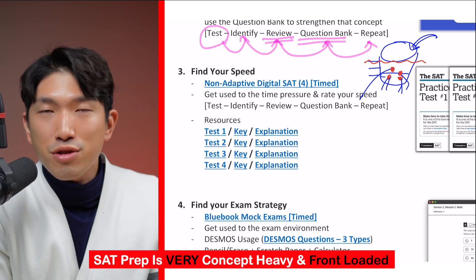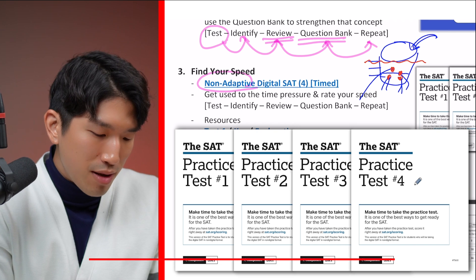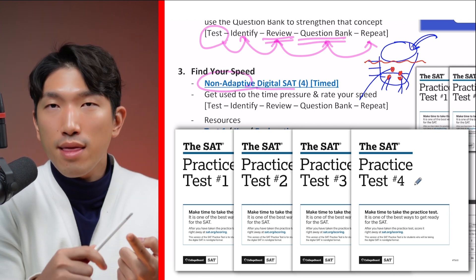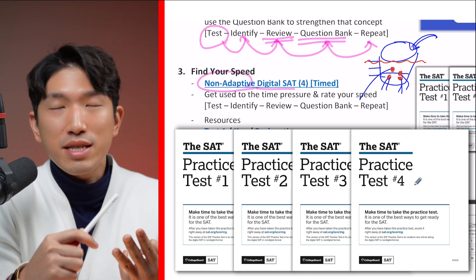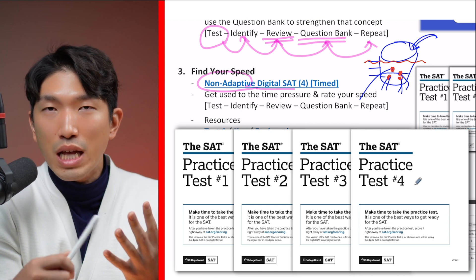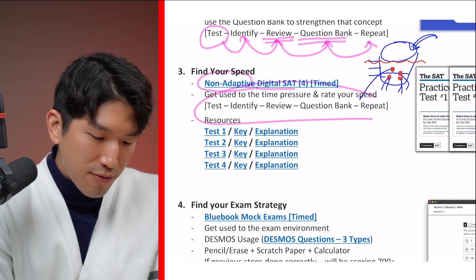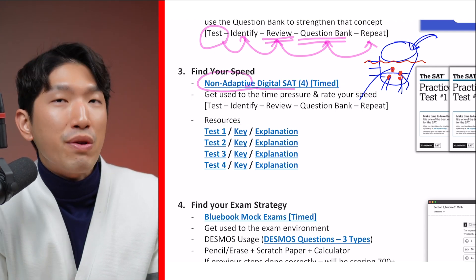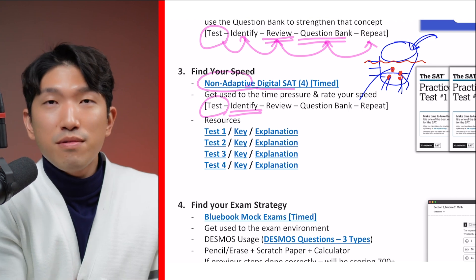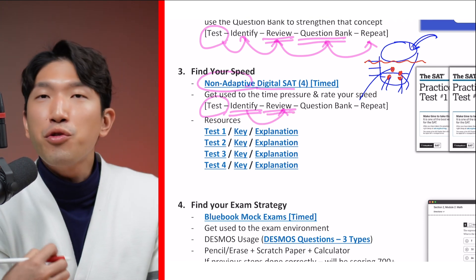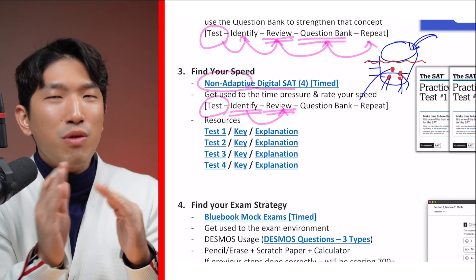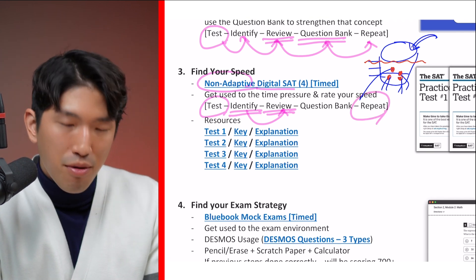If you haven't done the past two steps correctly, this third step is going to feel like hell — no matter what you do, you'll keep missing questions and won't reach your target score. For this step, we're going to use the non-adaptive digital SATs. What's different about these is that they are actually on paper; however, the questions are more in line with the digital SAT and how they are worded and solved is essentially identical to questions on the actual digital SAT. So these are the next closest thing to the real digital SAT, and they're a great resource to find your speed. The process is similar to the previous step, but you also review your speed: was I going too fast or too slow? Can I afford to slow down or should I speed up? Play around with different speeds to find the one that works best for you, then repeat until you find that sweet spot.